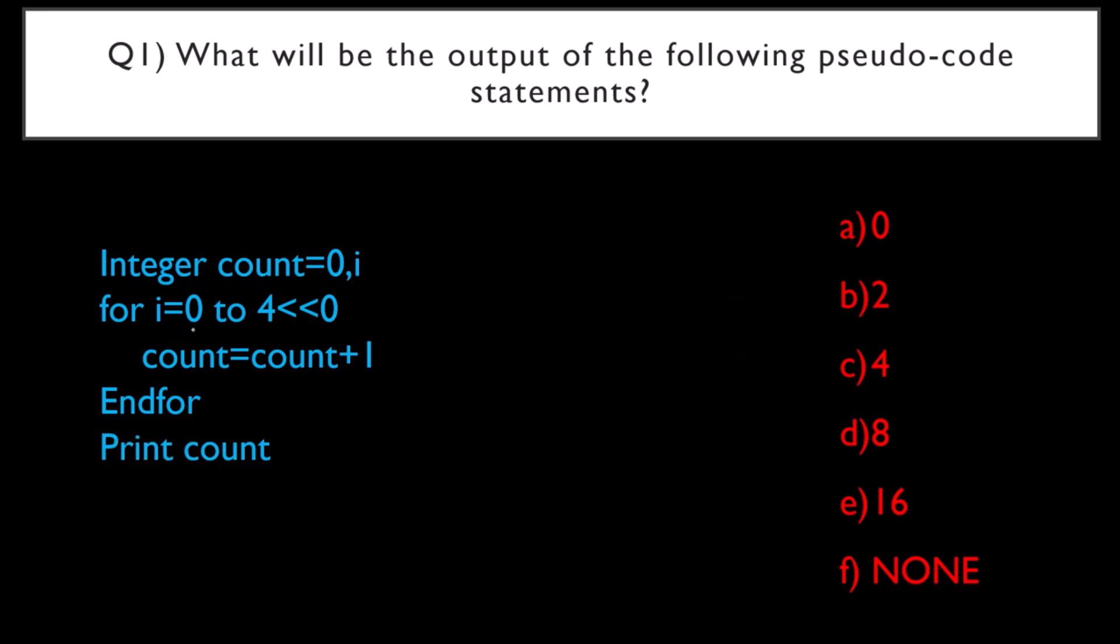Here, what we are having is i equals 0 to 4 left shift 0. What is the number 4? Number 4 is nothing but 4, rest all 0. If I left shift it 0 number of times, what is the answer? 4 itself. So this loop is going to run from i equals 0 to 4.